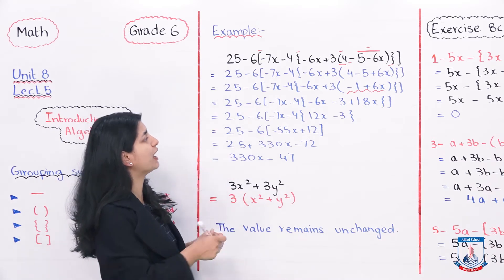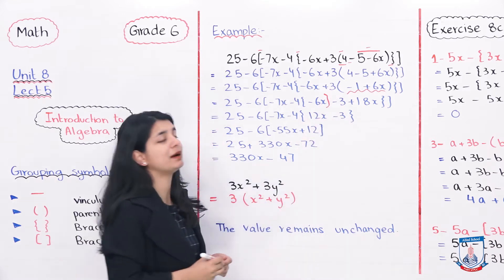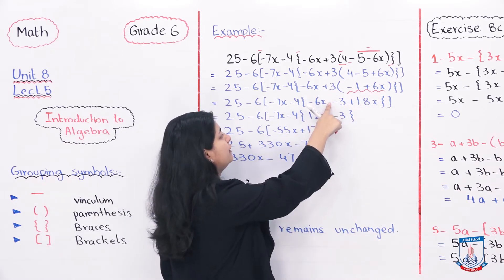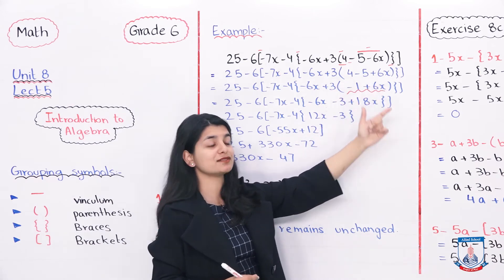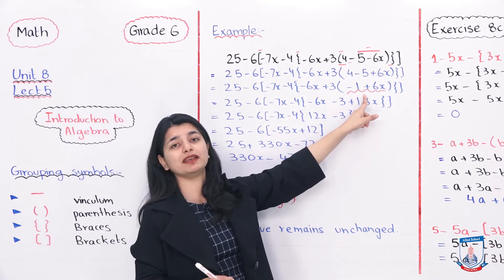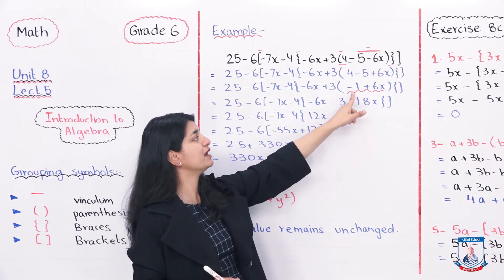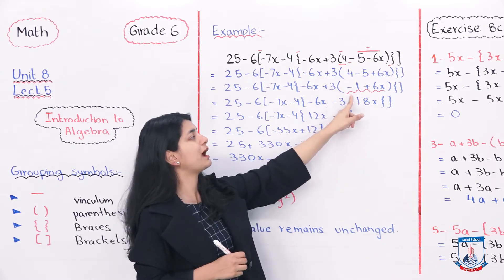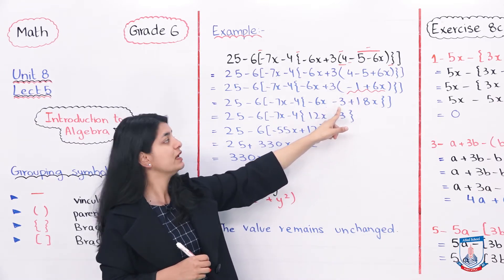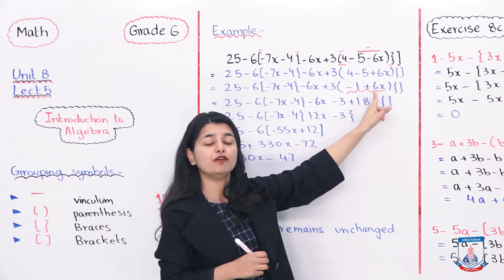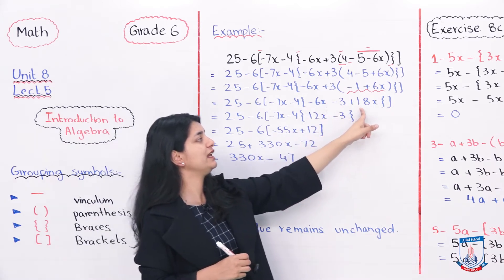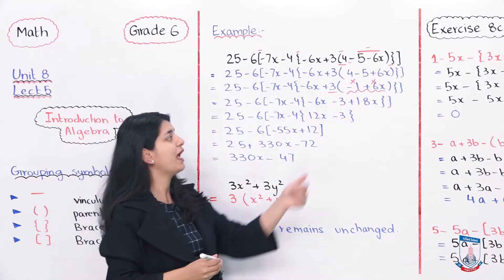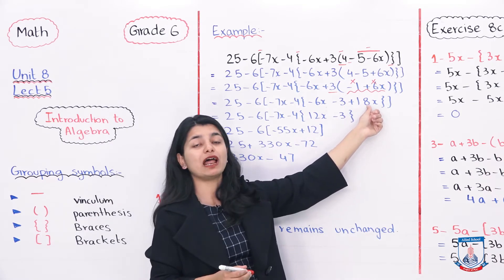The next step is to copy everything as it is and then multiply 3 into the brackets. We have to multiply 3 with everything inside our parentheses. So minus 3 multiplied into minus 1 gives plus 3, and plus 3 multiplied by 6x gives plus 18x — because 3 into 6 is 18. So that plus 3 has been multiplied with 1 and with 6x, giving minus 3 plus 18x. Your parentheses are now finished because you have solved them.